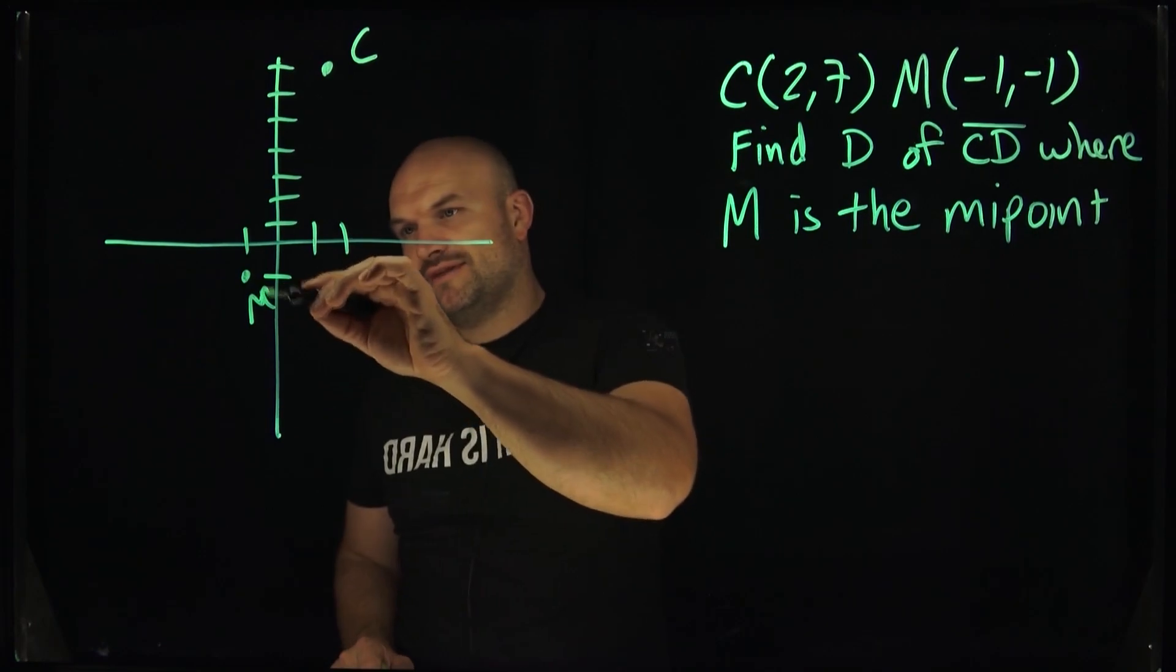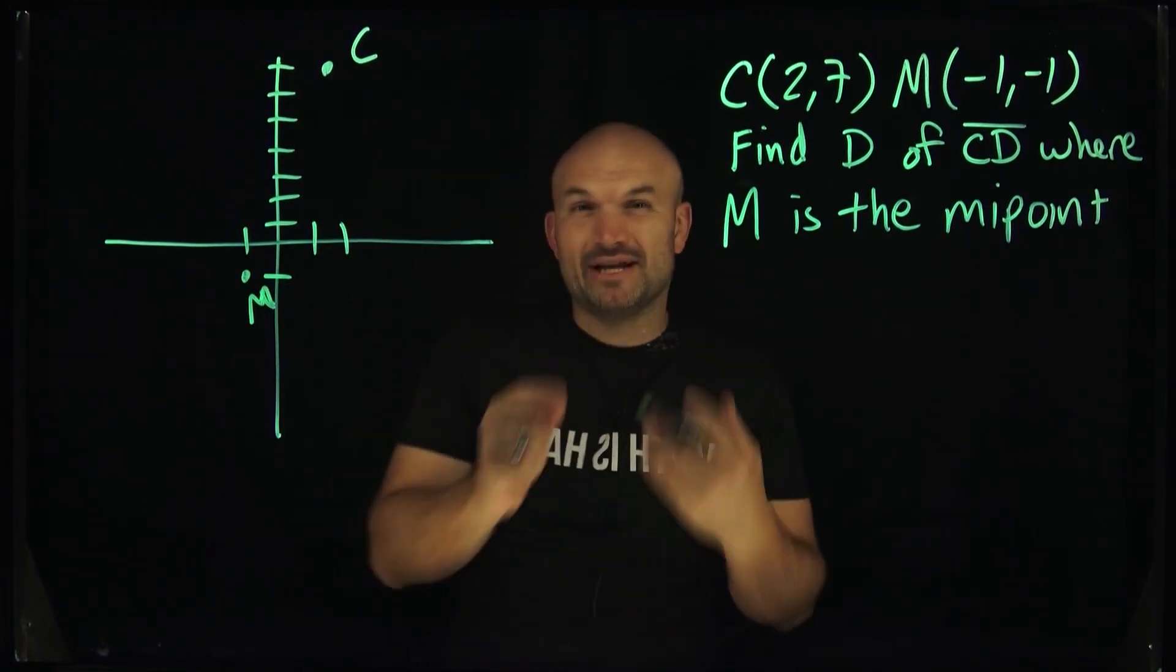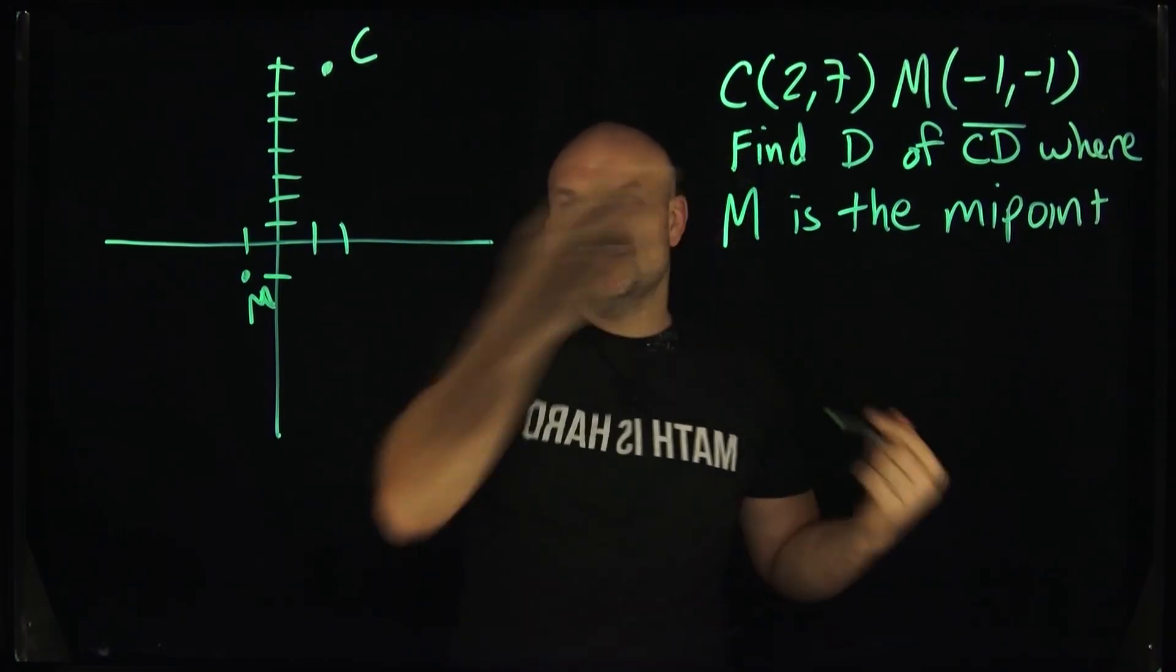So it's important that we understand exactly what we have here. We have this point C. We have M, which represents the midpoint. So that means that's the middle horizontally and vertically of this other point D that we're trying to find.